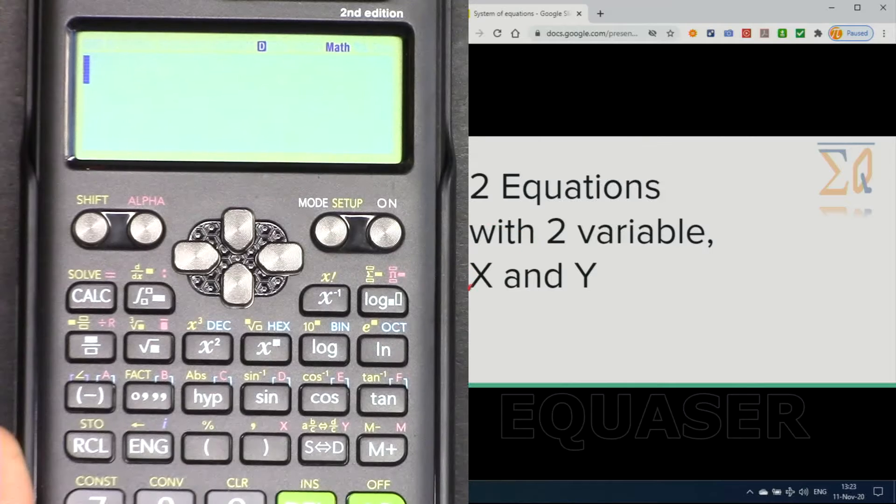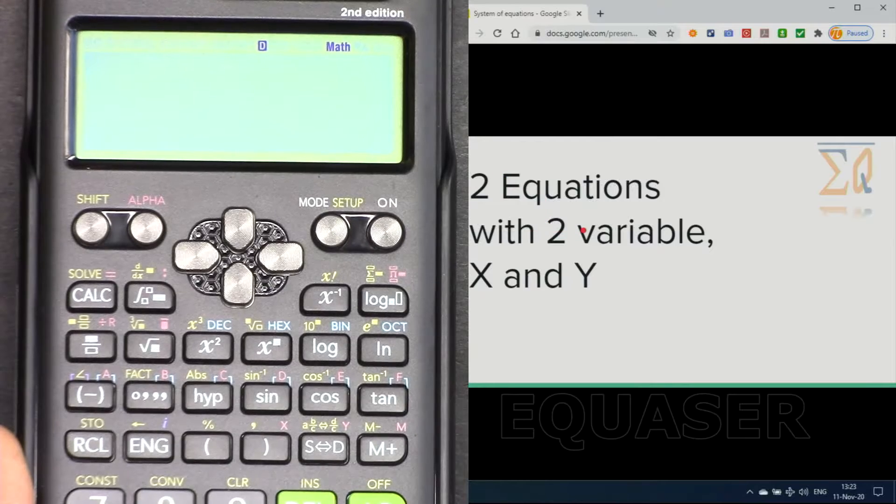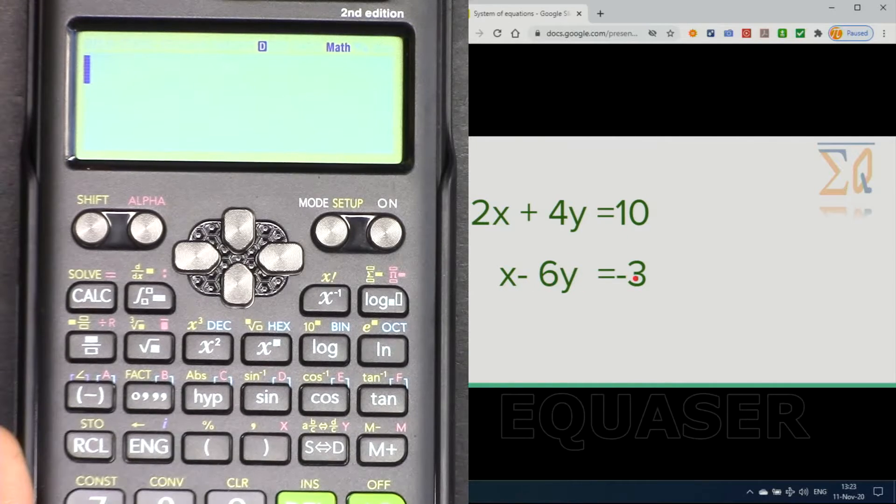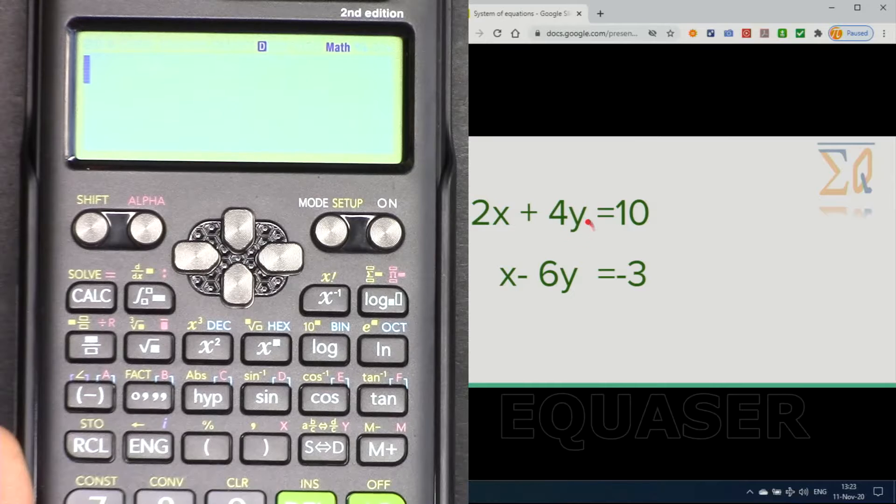When we have two variables of x and y, then we must have two equations. Here is an example: we have 2x plus 4y equals 10, and we have x minus 6y equals minus 3. As you can see we have two equations and two variables x and y. If we have three variables, we need three equations.